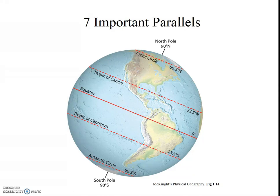As you study the diagram or the globe, note that the north pole and south pole are actually points, not lines. You can now imagine where the tropics are — the region of the Earth that lies between the Tropic of Cancer and the Tropic of Capricorn. The subtropics are the regions just outside the tropics. The middle latitudes, where we live, are generally between 30 and 60 degrees north and south. Polar regions are within a few degrees of the poles.